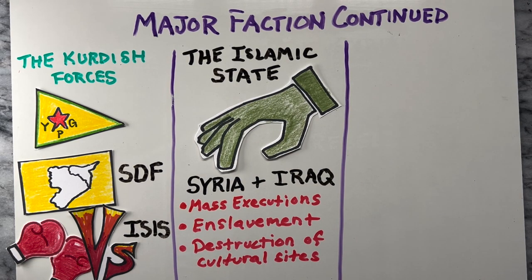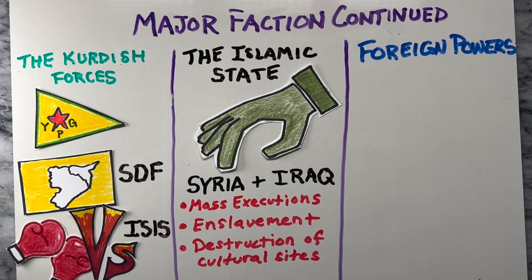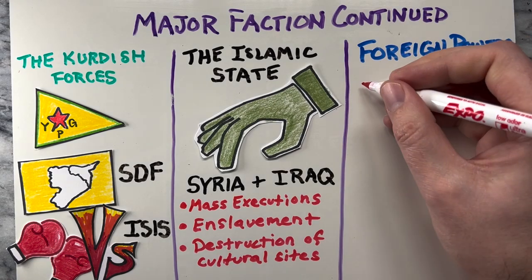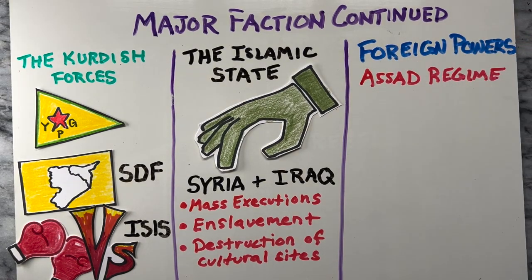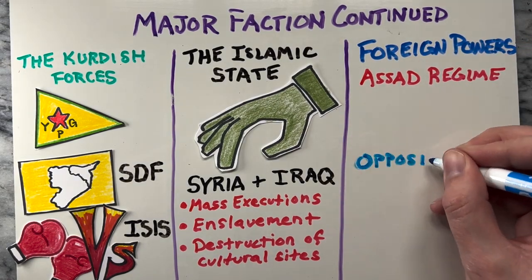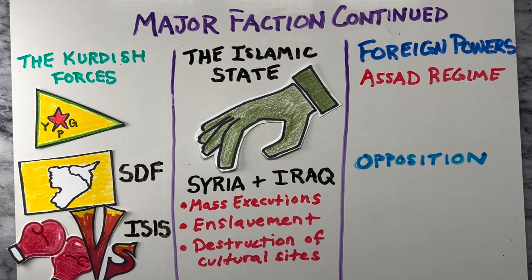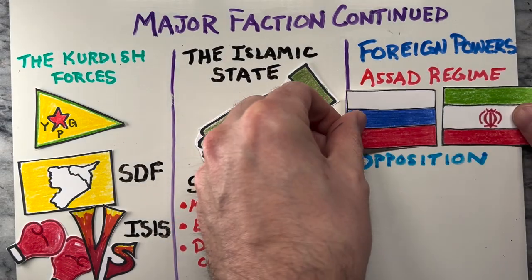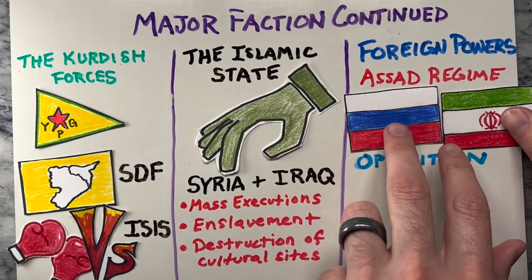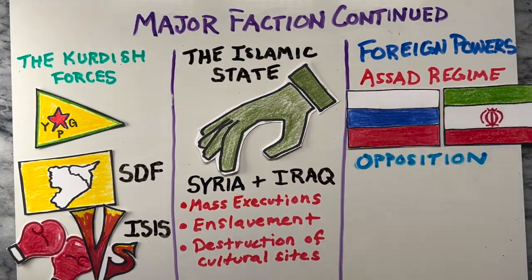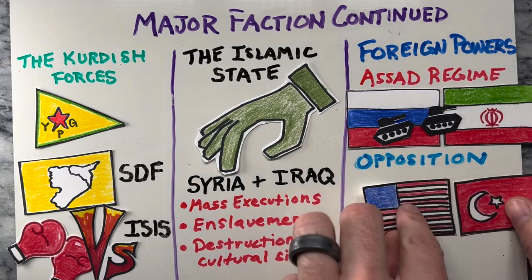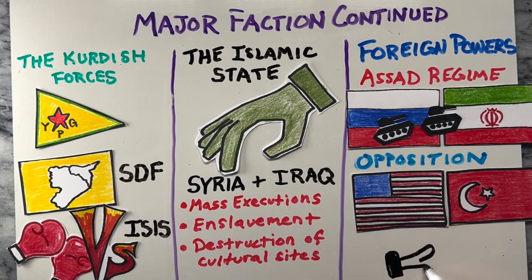Lastly, there are the Foreign Powers. Several foreign powers have intervened in the conflict either to support the Assad regime or the opposition. The main actors are Russia, Iran, and Hezbollah, who have provided military and logistical support to the regime, and the United States, Turkey, and several Gulf states, who have supported the opposition.